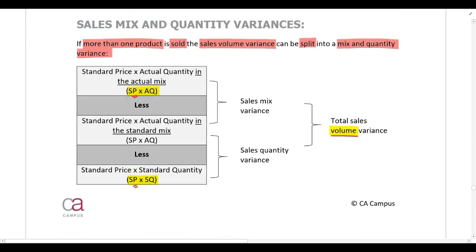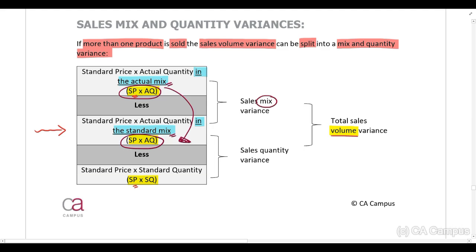If you are going to split the volume variance into a mix and quantity variance, there is only one new calculation. All we do is repeat the standard price multiplied by the actual quantity. The only difference is: one uses the actual quantity in the actual mix, and the other uses the actual quantity in the standard mix. That leaves you with the mix variance, and the balance is the quantity variance.